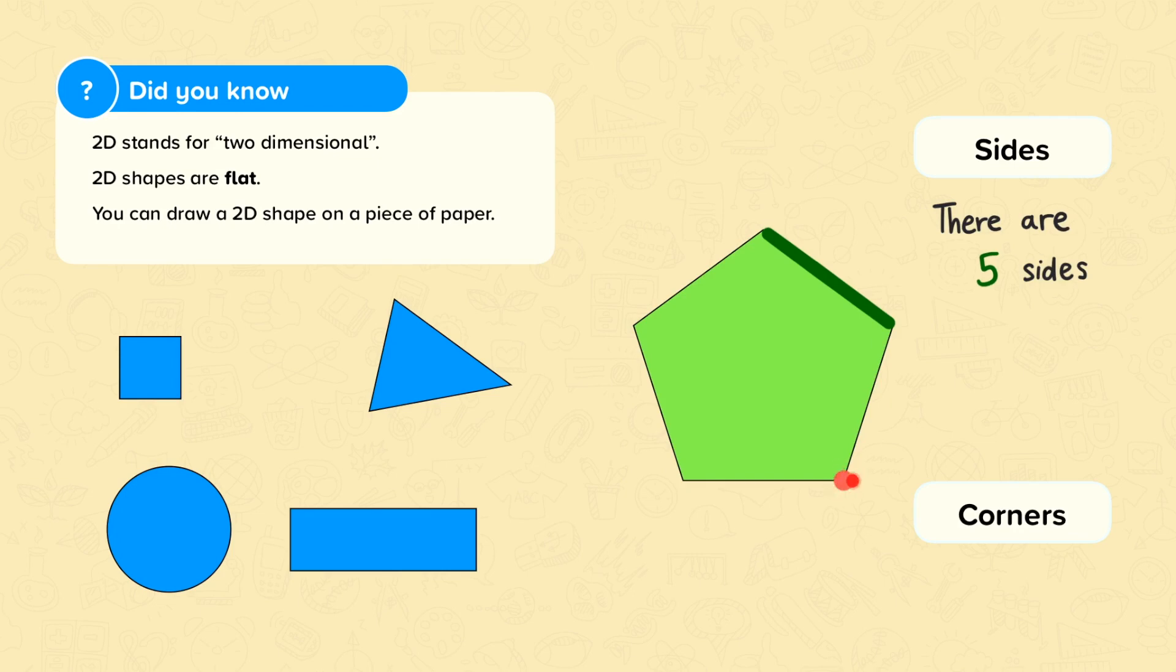This is a corner. So the shape has one, two, three, four, five corners as well.